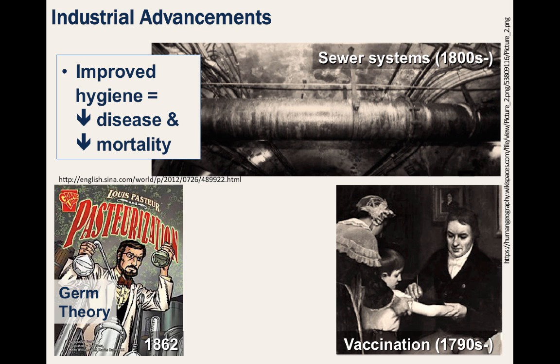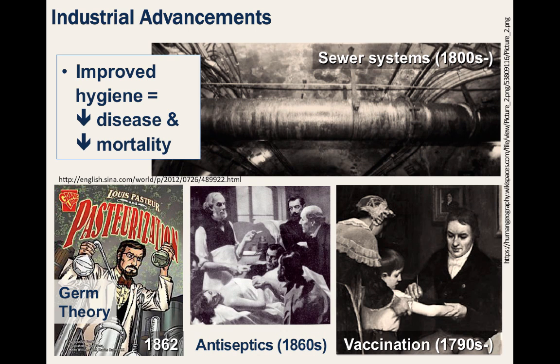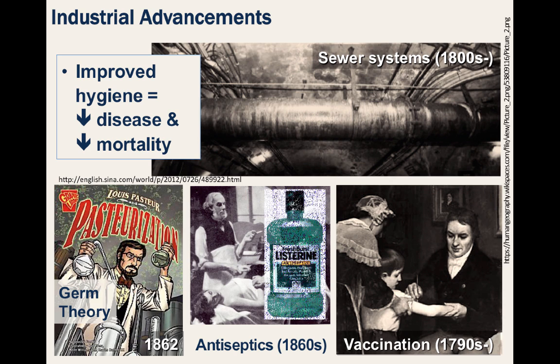Another key innovation was antiseptics, which are chemicals that kill microbes and prevent infection, first discovered by a surgeon named Joseph Lister. In fact, the eponymous product Listerine was named after him. These advancements, among others, reduced the diffusion of disease, concurrently reducing the rates of mortality.